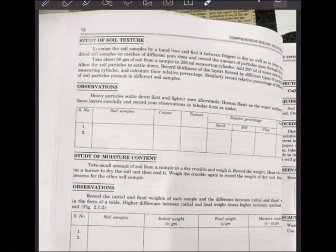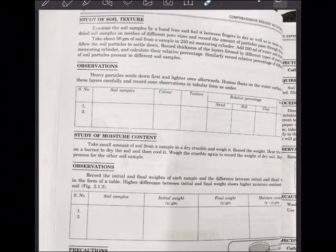Heavy particles, as we expect, settle down first and lighter ones settle upwards. Humus floats on the water surface. Observe these layers carefully and record your observations in tabular form. There are two pages in your record. On the left side you have a lined page where you will write all the description of the experiment. On the right side, which is a blank paper, you will put tables and diagrams.